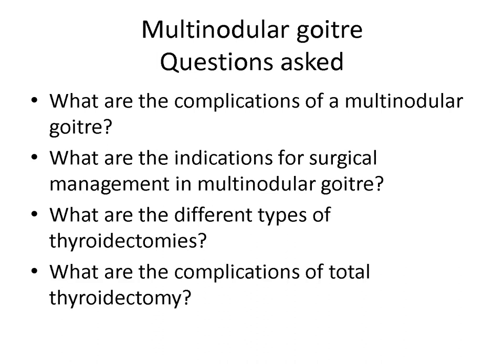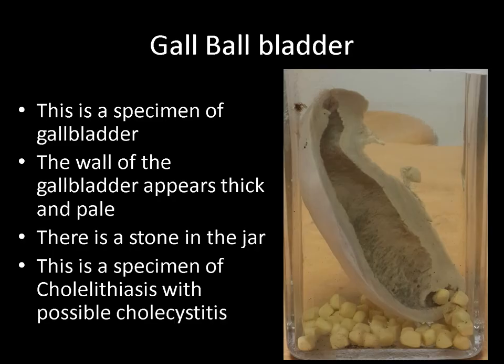Next you can be asked about the different complications of thyroidectomies. Recurrent laryngeal nerve injury is one of the complications of total thyroidectomy. Injury to the parathyroid glands can lead to hypocalcemia. Other complications can be hemorrhage and change of voice or hoarseness of voice.